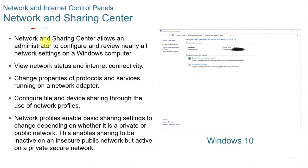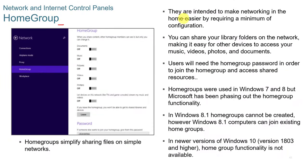The Network and Sharing Center allows an administrator to configure and review almost all network settings on a Windows computer. You can view network status and internet connectivity, change protocol and service properties, and configure file and device sharing. Network profiles allow basic sharing settings to change depending on whether the network is private or public. Home groups, used in Windows 7 and 8 to make home networking easier by sharing library folders, have been phased out in Windows 10 and 11.